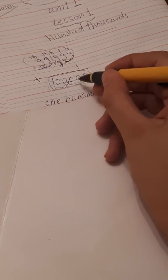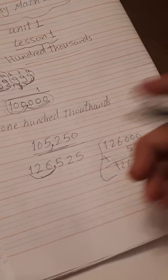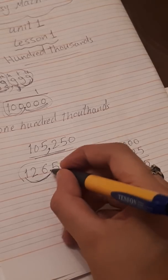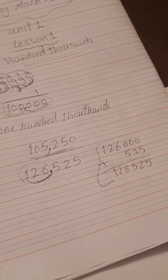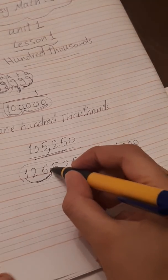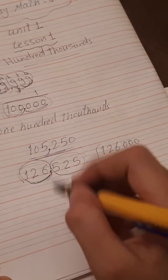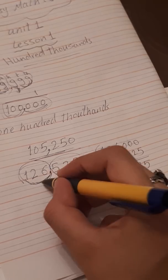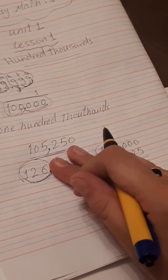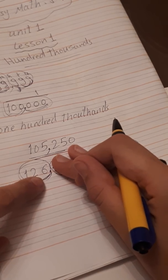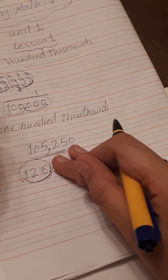Now can we read a number like this? We will divide it also - this family, these three numbers alone, and these three numbers alone. And we will start from the left: one hundred twenty-six. We will hide this part and 126... 126 what? 126 thousands.